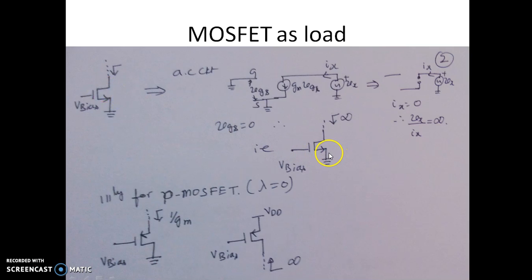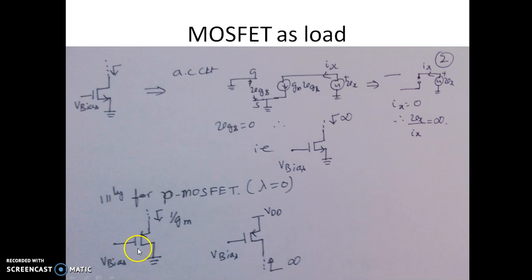For a MOSFET with its source grounded, if you look from the drain with a bias voltage applied to the gate, you see an infinite resistance when lambda = 0. Similarly, for a PMOS, looking from the source with gate at DC bias and drain grounded, it is 1/gm; looking from the drain, it is infinity. In both cases we assume lambda = 0. So: from the drain it is infinite resistance; from the source it is 1/gm — whether NMOS or PMOS.